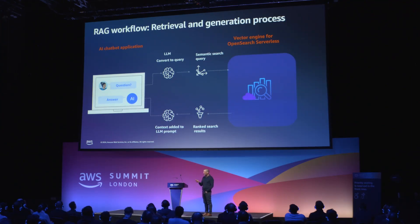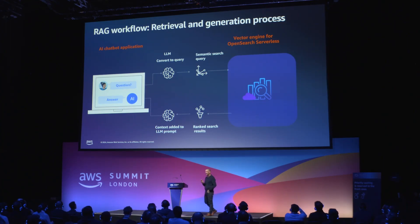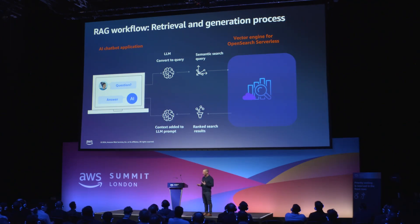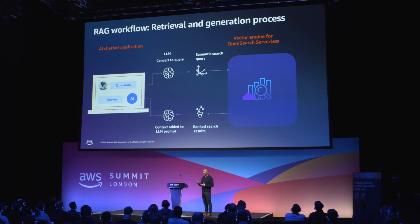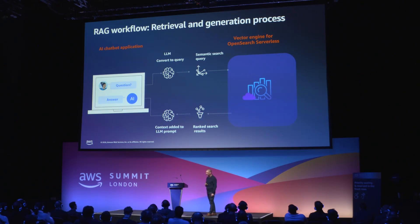When you think about the process, you submit a question, that query is then converted into a vector representation, you do a similarity search, and you get back the relevant matching documents — in this case, hotel descriptions. But then you need to do some context aggregation. You bring together all of that content and apply another prompt to it to refine the response and make it tailored to the original question.